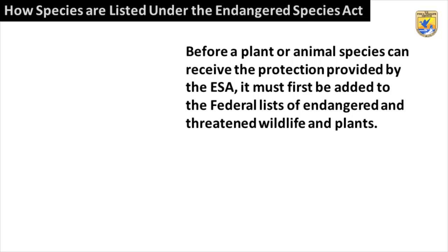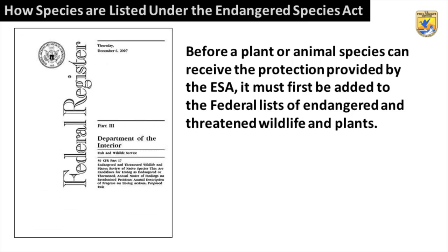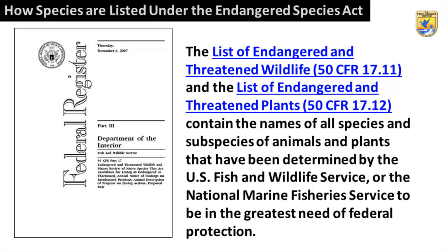Before a plant or animal species can receive the protection provided by the ESA, it must first be added to the Federal List of Endangered and Threatened Wildlife and Plants. The List of Endangered and Threatened Wildlife, 50 CFR 17.11, and the List of Endangered and Threatened Plants, 50 CFR 17.12, contain the names of all species and subspecies of animals and plants determined by the U.S. Fish and Wildlife Service or the National Marine Fisheries Service to be in the greatest need of federal protection.